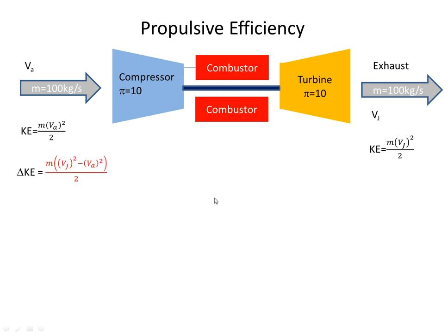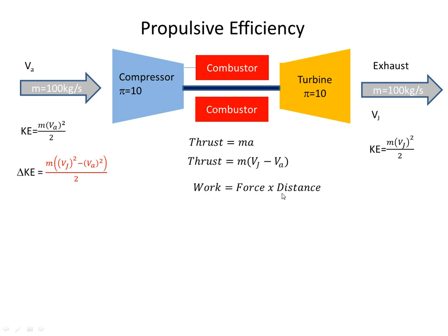Therefore, the change in kinetic energy is equal to the mass times (Vj² minus Va²) / 2 — so one minus the other. I also know that the engine will produce some thrust, and thrust is a force equal to mass by acceleration. In this case it's the mass of air by the acceleration — going out at Vj and came in at Va, so the change in velocity Vj minus Va is equal to the acceleration. I also know that work is equal to force by distance, and in this case the force is thrust and the distance is D.